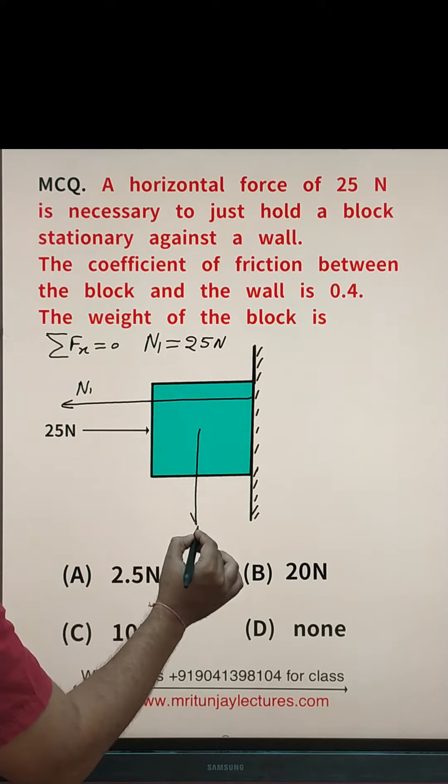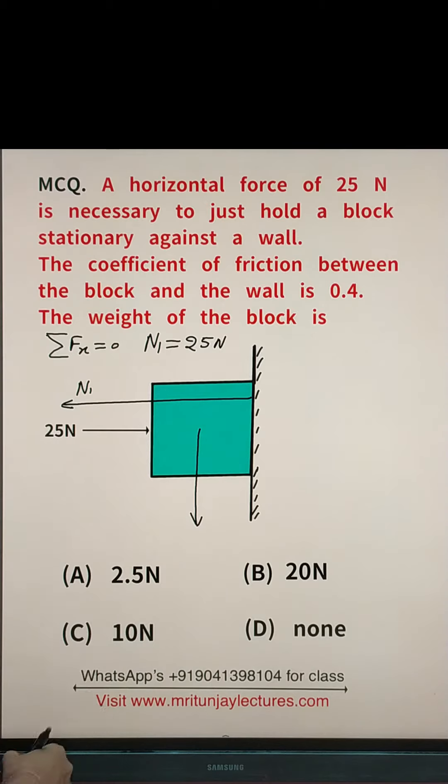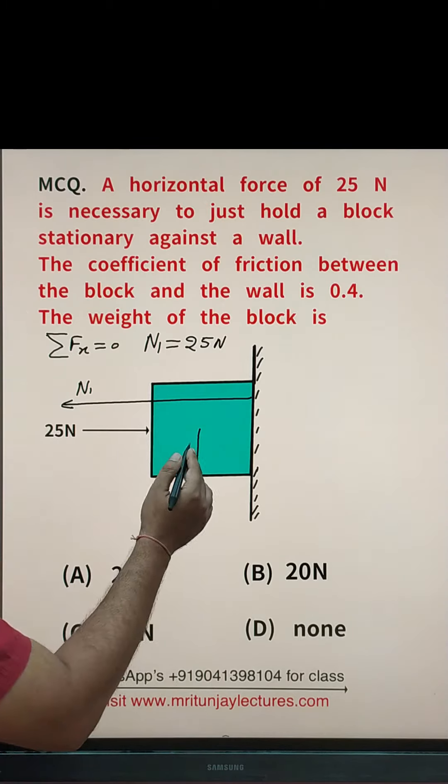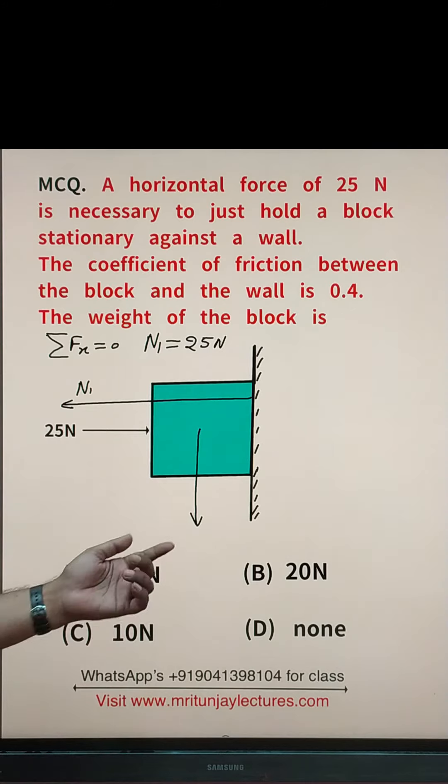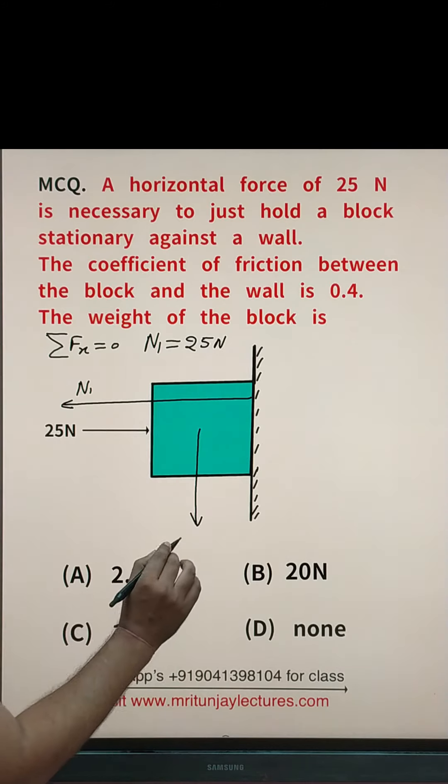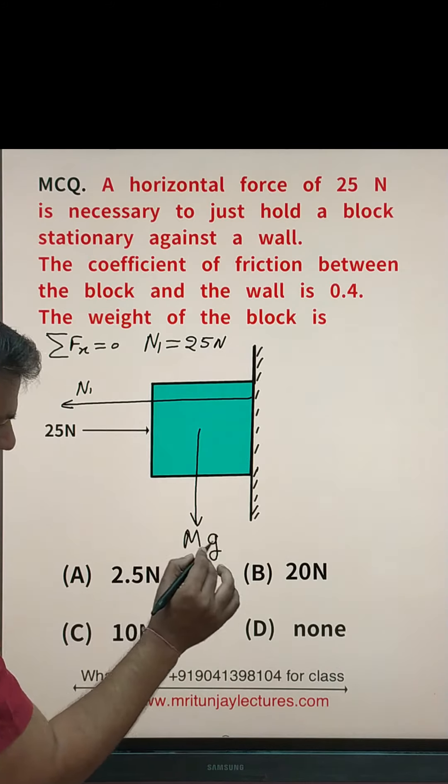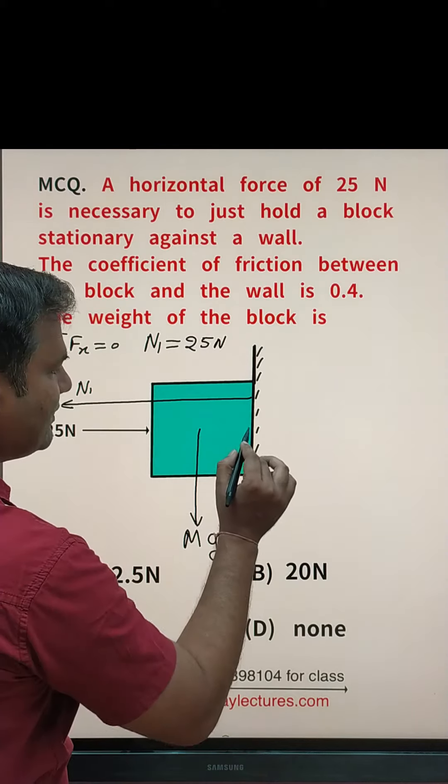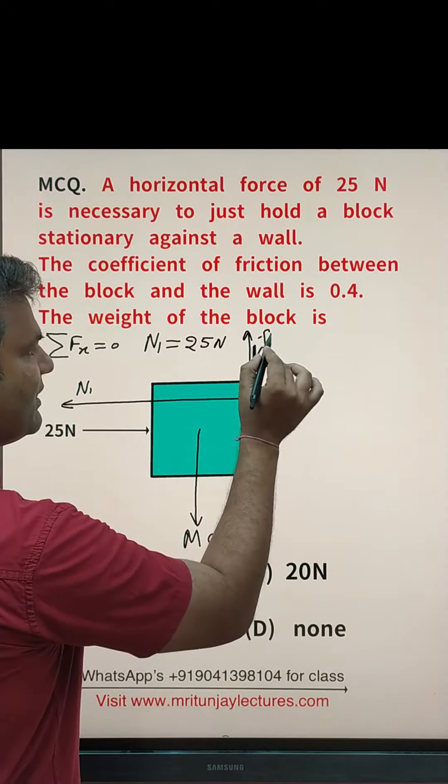First of all, applied force in which direction? Downward. Suppose that applied force, that is Mg. M into G downward. Frictional force acts always in opposite direction. In this direction, F.